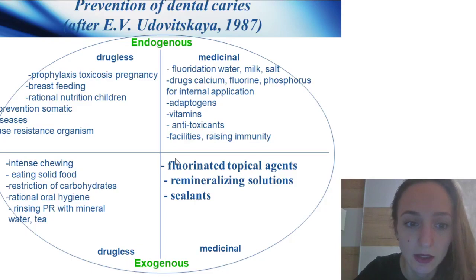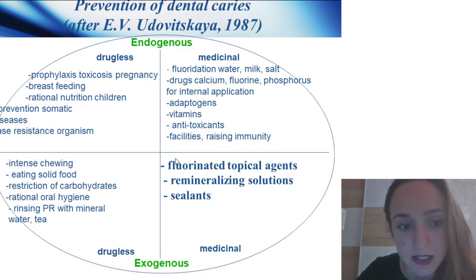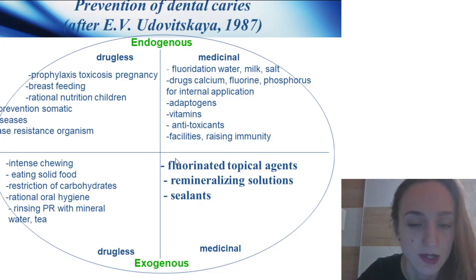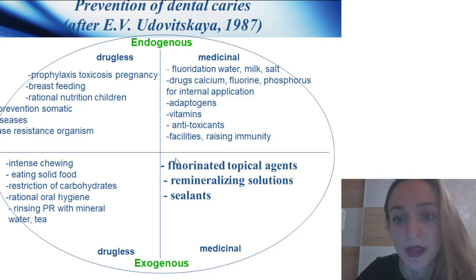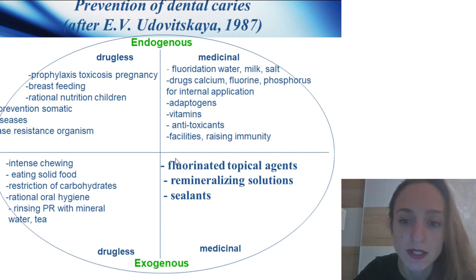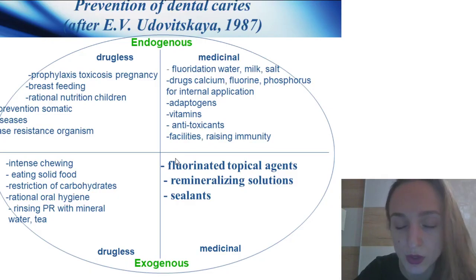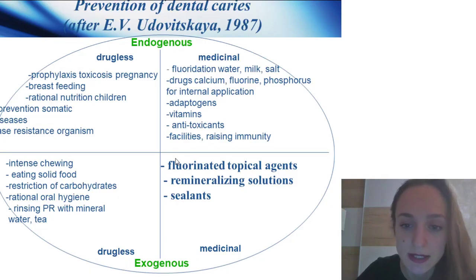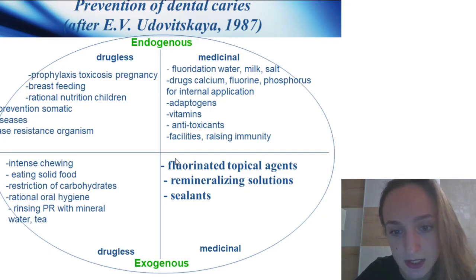Medicinal endogenous prevention includes fluoridation of water, salt, milk; vitamins with calcium, fluorine, and phosphorus for internal applications; adaptogens, vitamins, antioxidants, and facilities raising immunity. Drug-free prevention includes intense chewing of hard foods, personal oral hygiene with the use of therapeutic and preventive dental products, professional hygiene, balanced diet, restriction of carbohydrates, slow drinking of milk and tea, and rational prosthetic, orthodontic, or orthopedic treatment.